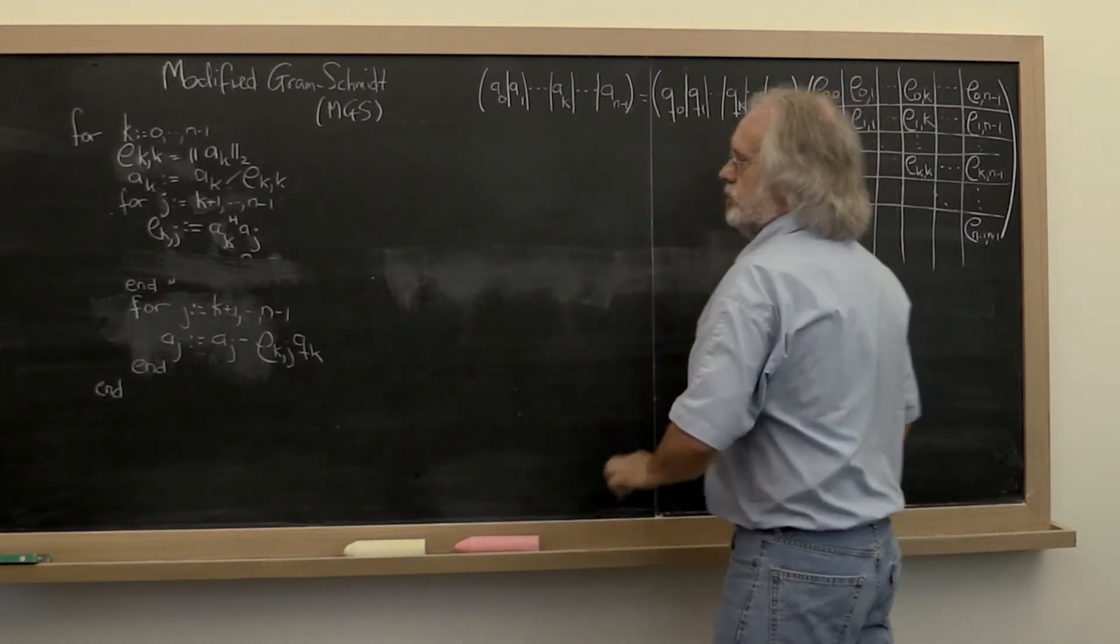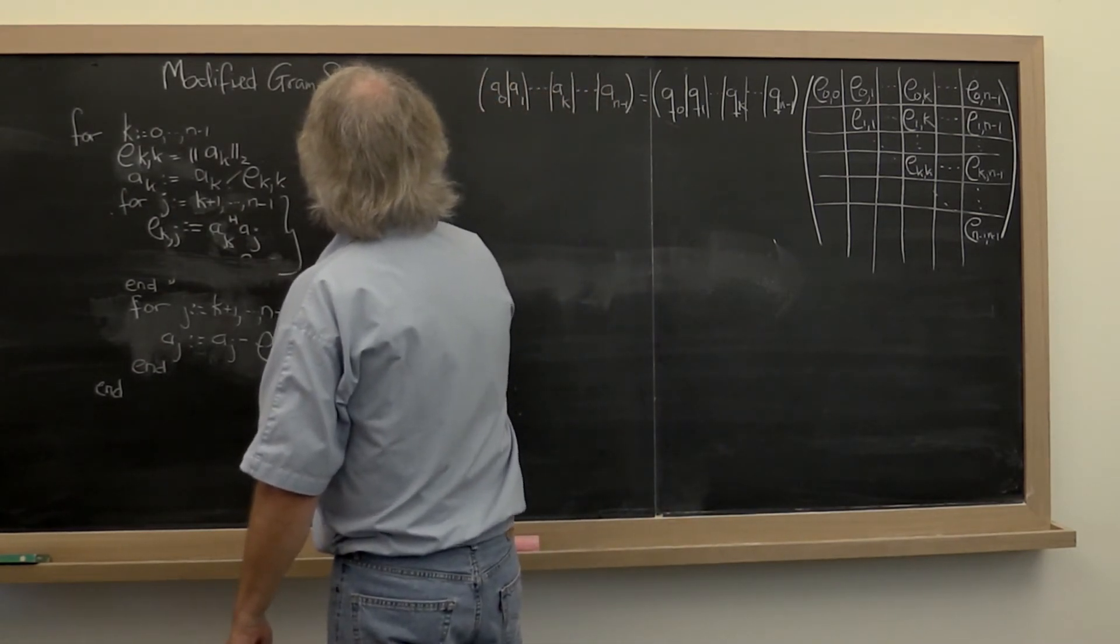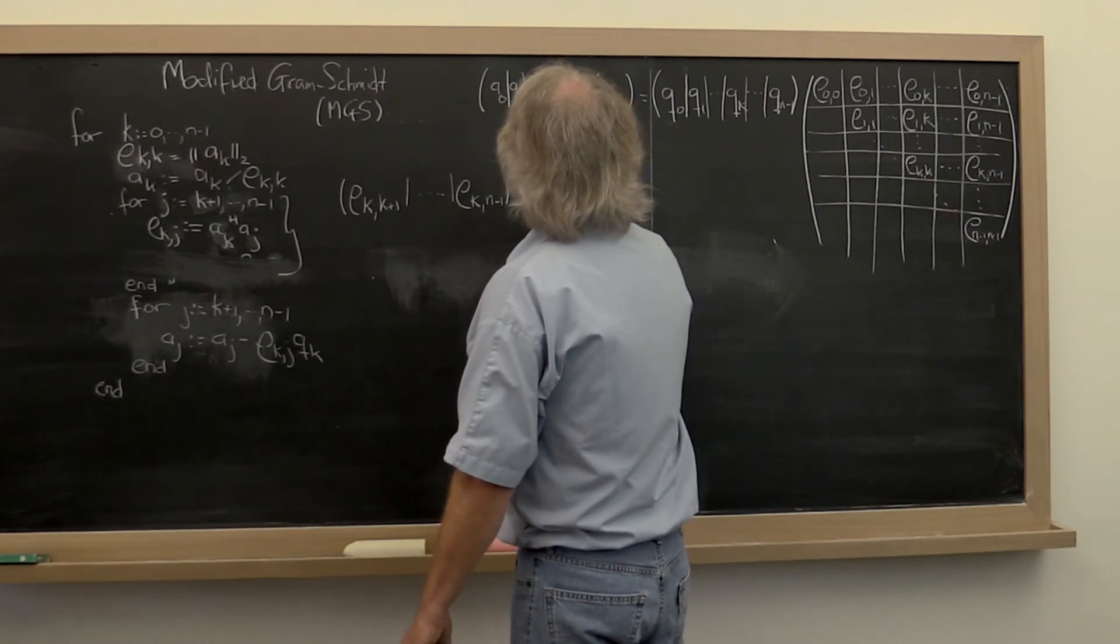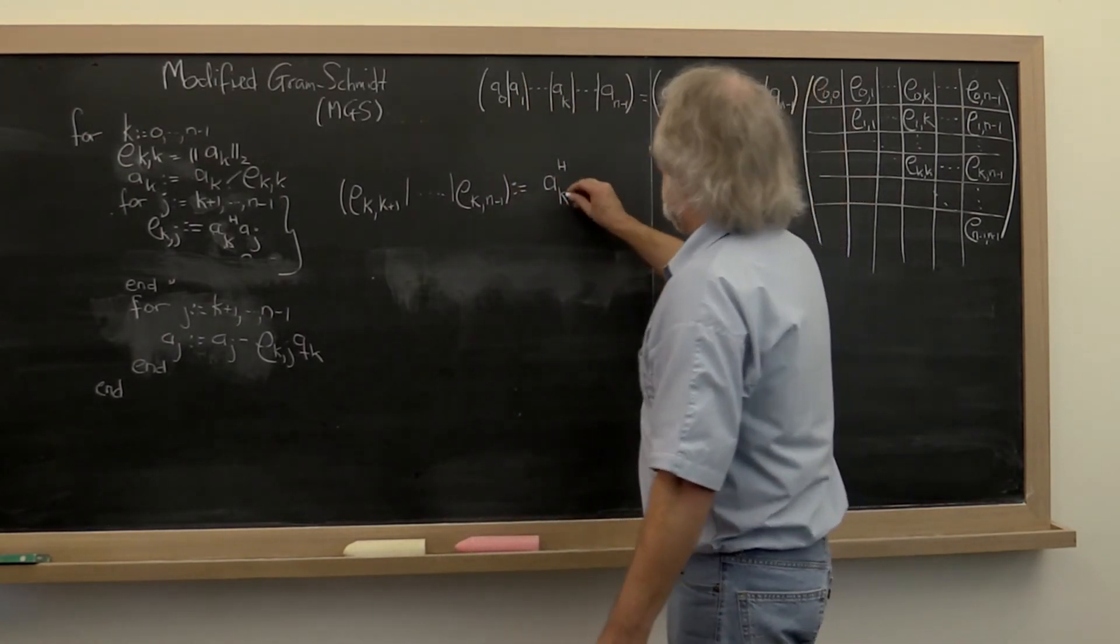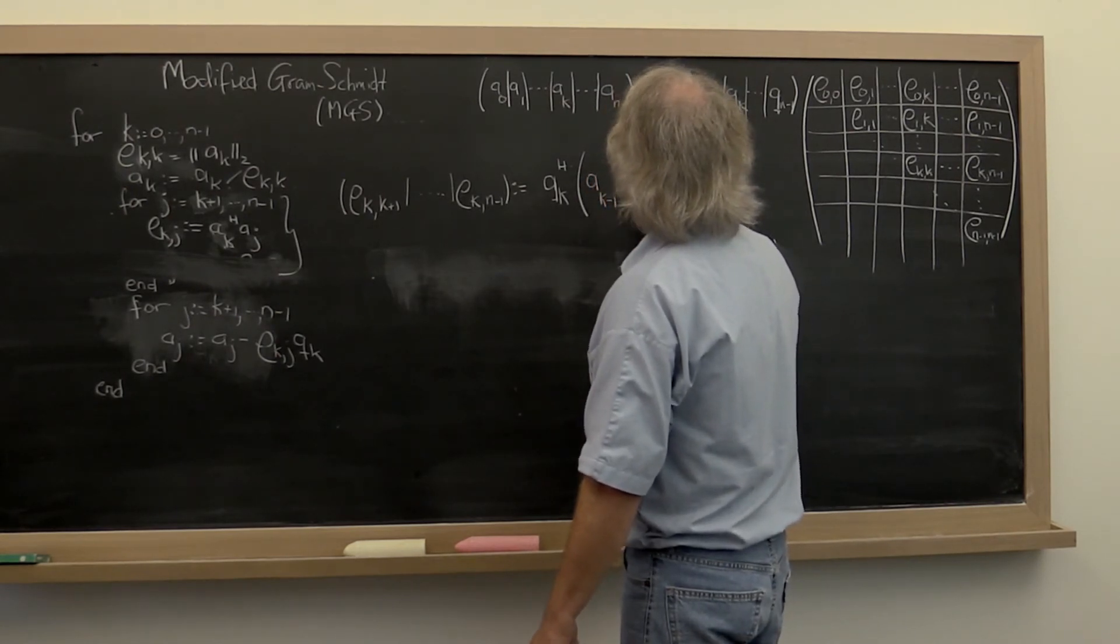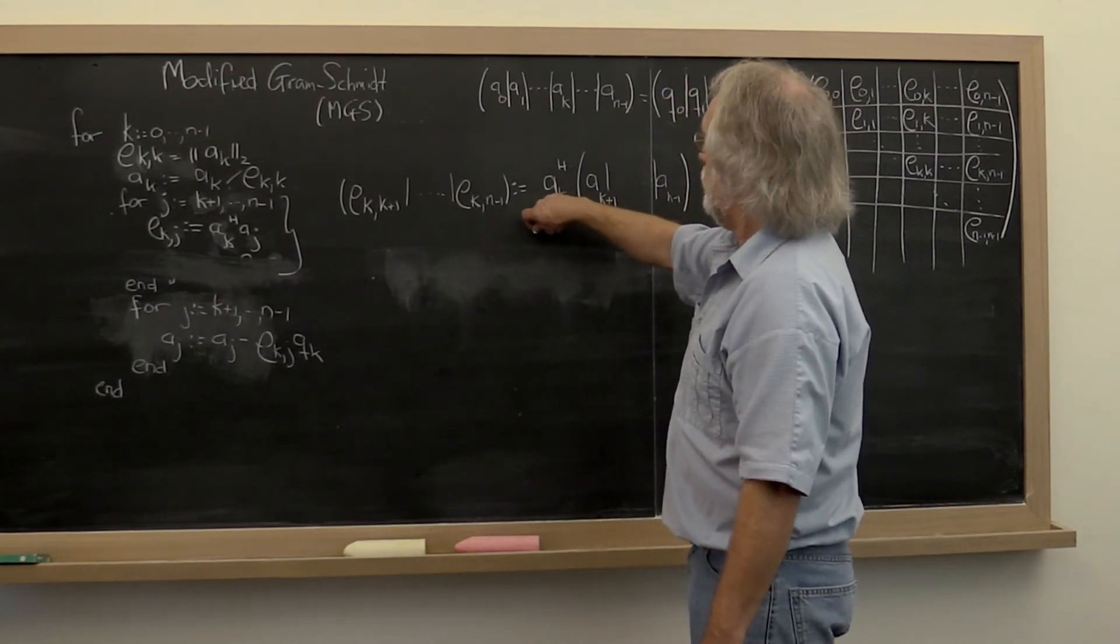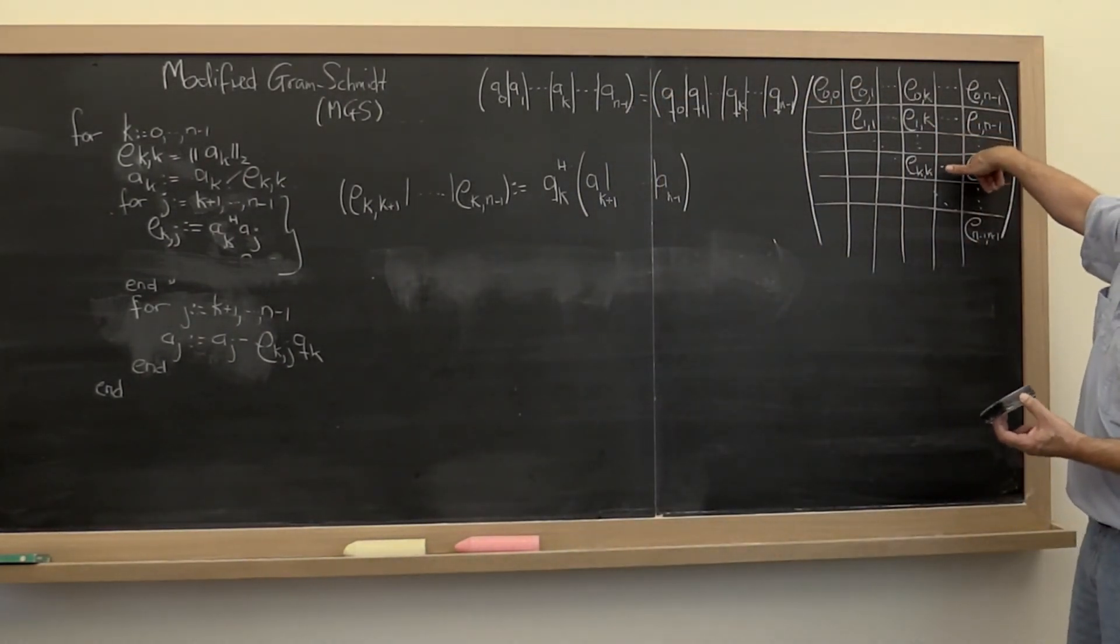If you think about it carefully, this right here is really the computation of row K comma K plus one through row K N minus one, being computed as the multiplication of the transpose of the kth column, which really is Q K, times the matrix of the future columns. So what that means is that instead of writing a loop and doing this one at a time, we can actually do this as a row vector times a matrix multiply to compute all of these coefficients simultaneously.